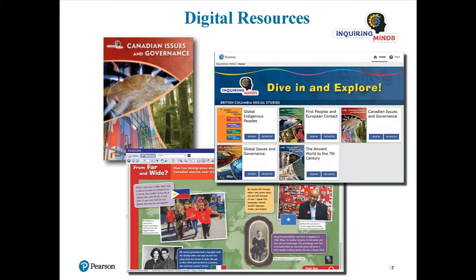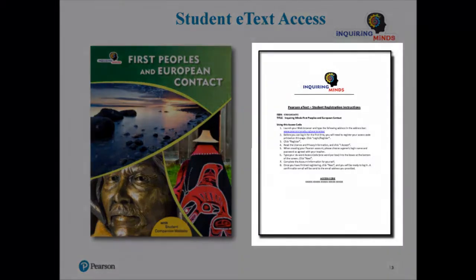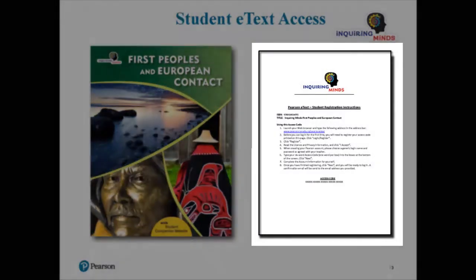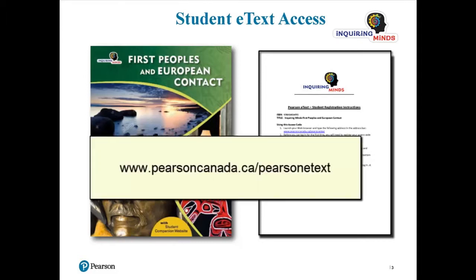Throughout this presentation, you will see sections from all the grades. When you purchase the Online Student eText, you will receive an email from us with the access code and instructions for registering. You create one username and password for each student. The accounts you create are valid for seven years, so we encourage you to make the usernames generic as you will be sharing them with new students each year. Once you have finished registering, your students go to www.pearsoncanada.ca/PearsonEText and click Login Register, then input their username and password. For information on how to use the Online eText, please see the separate video titled Overview Student eText.